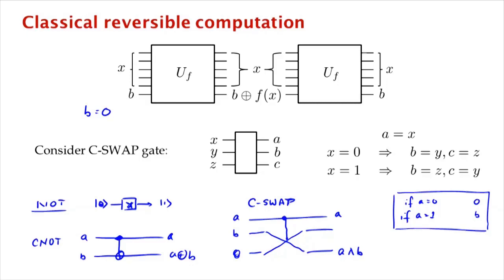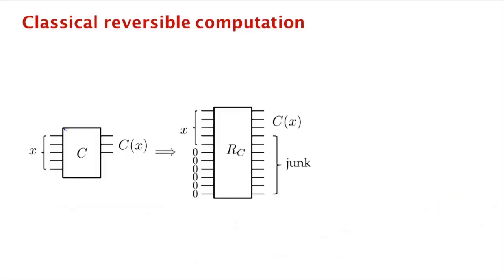We now have an AND gate and a NOT gate, which is universal for classical computation. Given any classical circuit, we can replace all the AND gates with controlled SWAP gates. In the process we may need to add fresh bits initialized to zero, and we get some output bits we didn't want — junk bits — but that's okay. So given a classical circuit, we can produce a reversible circuit with the same behavior, using NAND and NOT gates where NOT gates stay as-is and AND gates are replaced by controlled SWAPs.